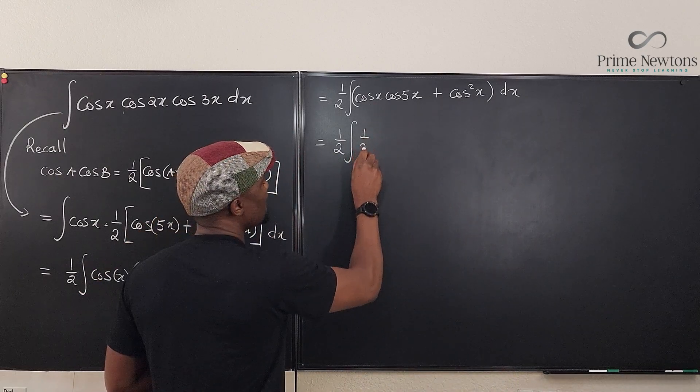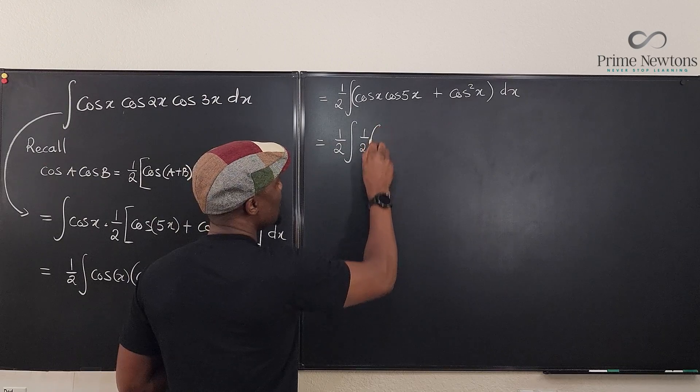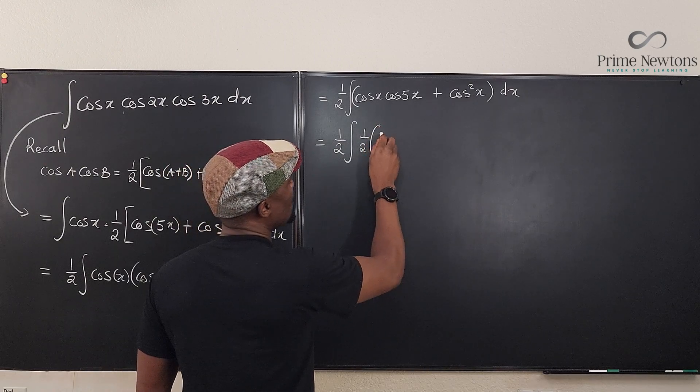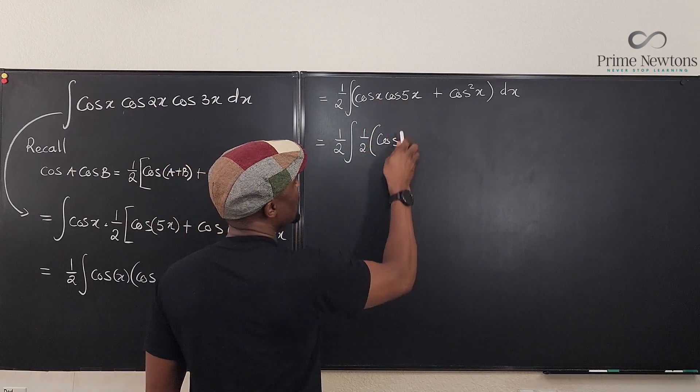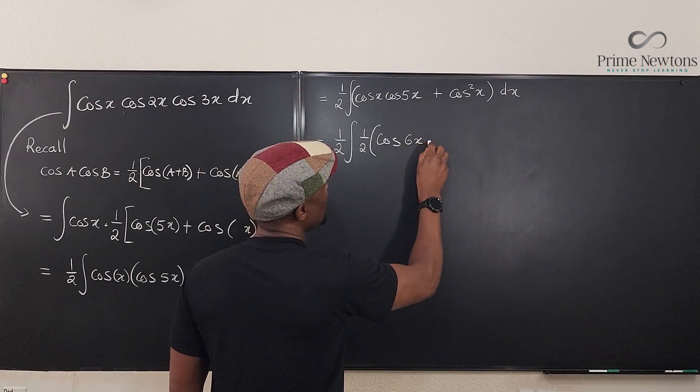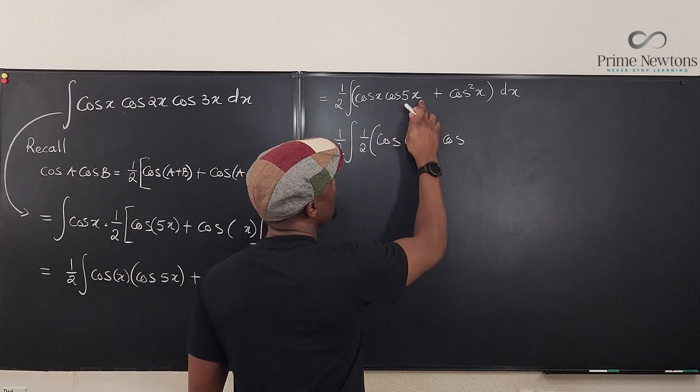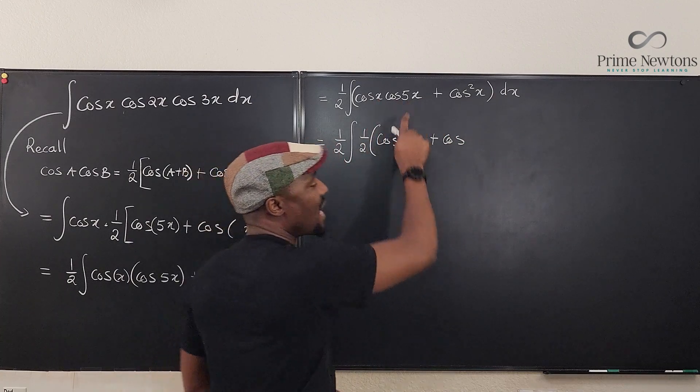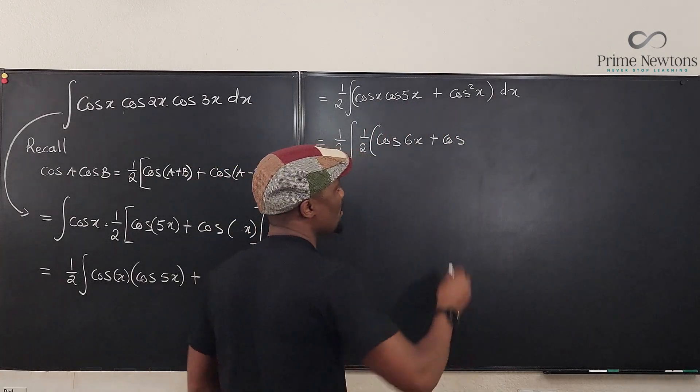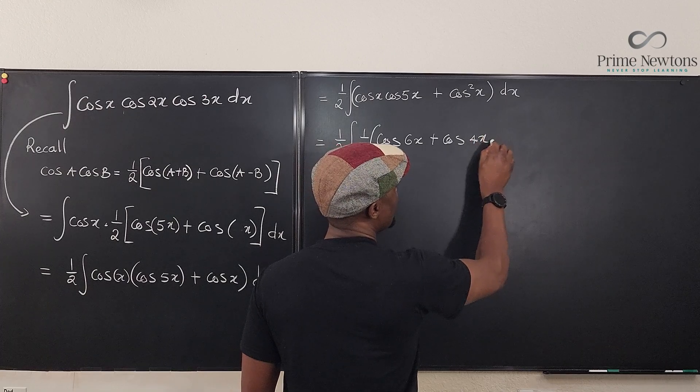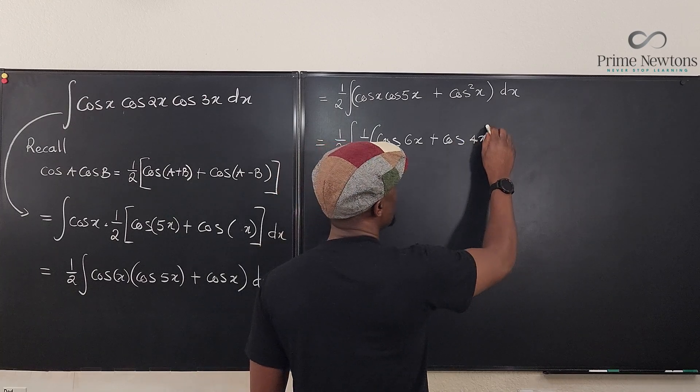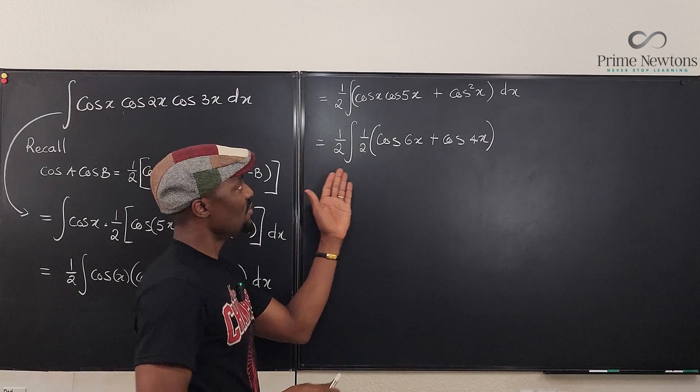Now we're going to rewrite this again using this formula because this is a product. We need to change it. So this is going to be one half of, it's going to be cosine of the sum, which is going to be 6x plus the cosine of the difference. x minus 5x is minus 4x. We're just going to write 4x because the minus doesn't matter in the case of cosine. And we're done. We have rewritten it.